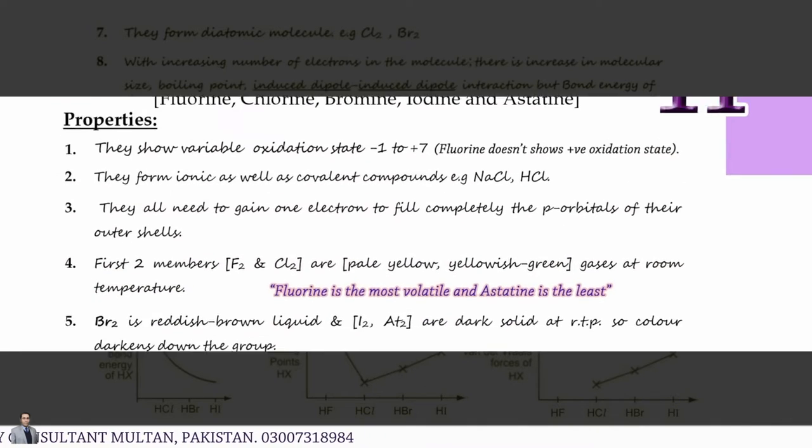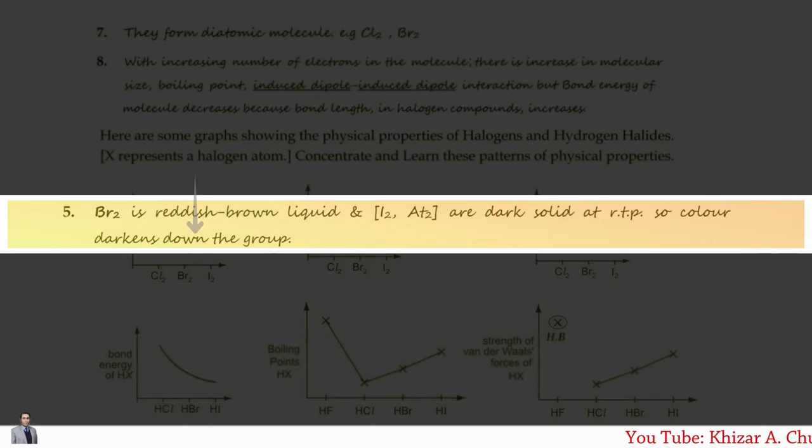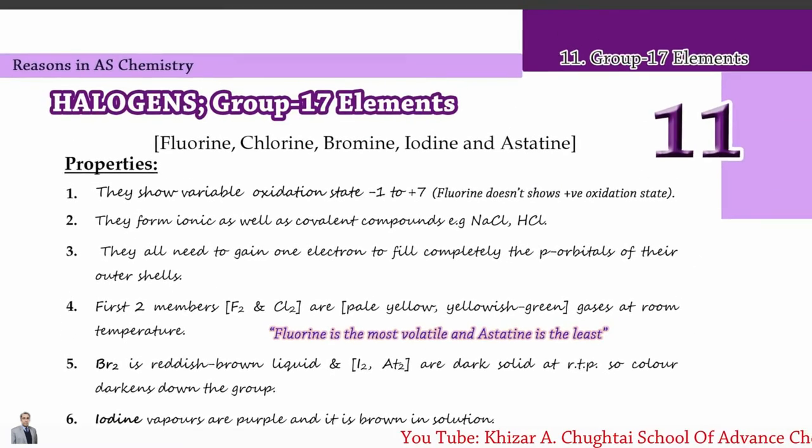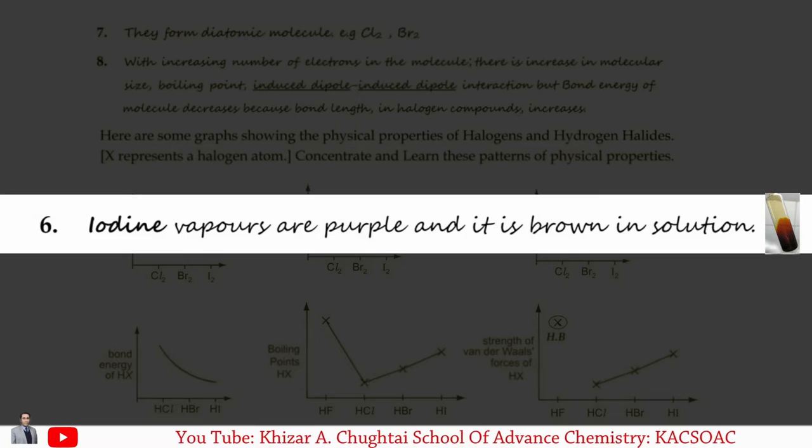Property 5: Bromine is a reddish brown liquid while Iodine and Astatine are dark solids at room temperature. So color darkens down the group. Vapors of Iodine are purple while its solution is brown.